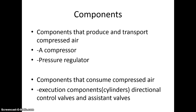There are two major components to a pneumatic system. First, components that produce and transport compressed air, including a compressor and a pressure regulator. Second, components that consume the compressed air, which are the actuating cylinders, directional control valves, and assistant valves.